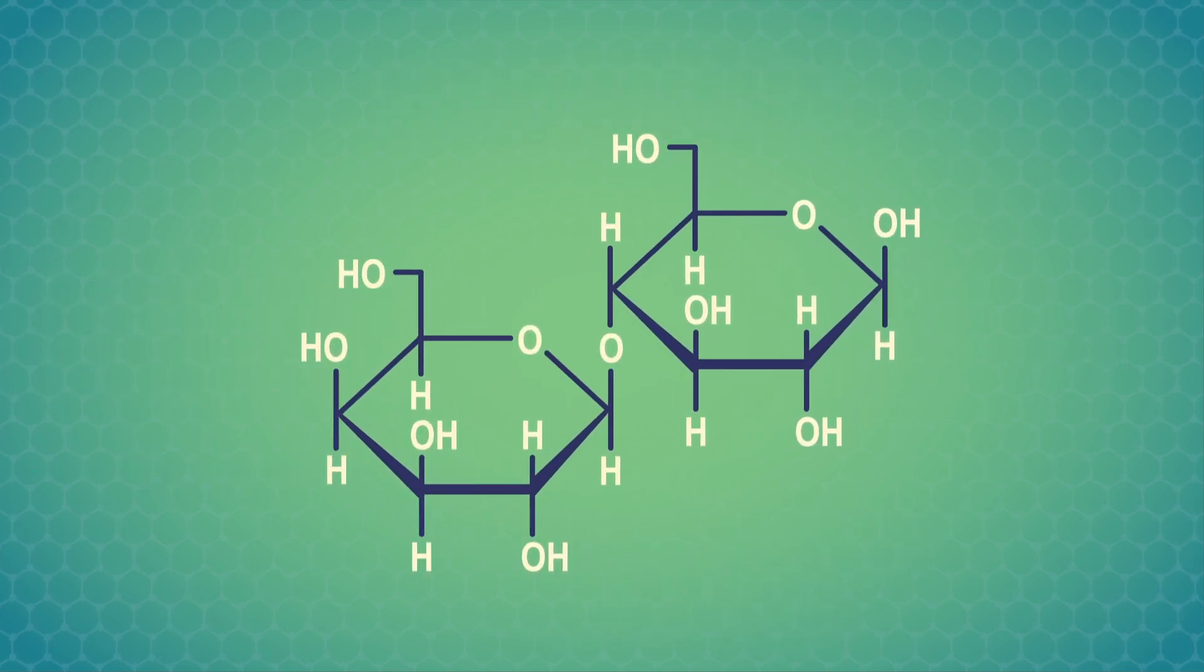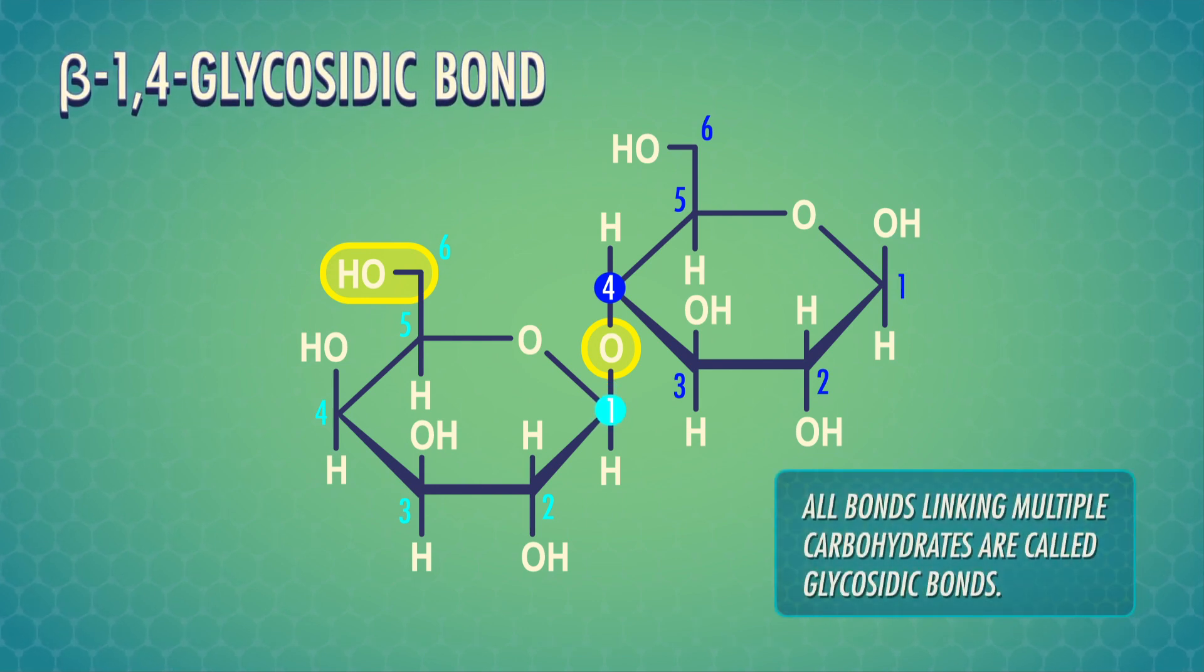In this Haworth projection, we can see galactose is in its beta conformation, and it's connected through its anomeric carbon, which is in the beta form. Then we use the anomeric carbon stereochemistry and the linked carbon atoms, starting with the lowest number. And we put this information together to get a beta-1,4 glycosidic bond.